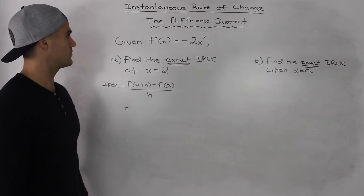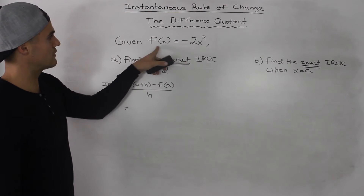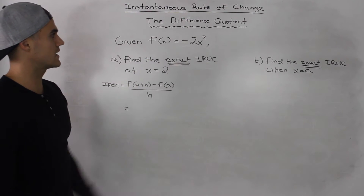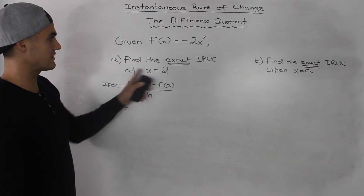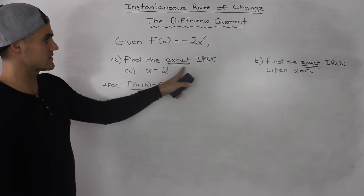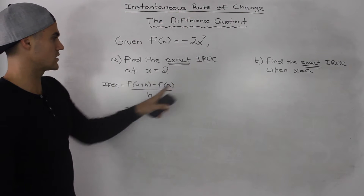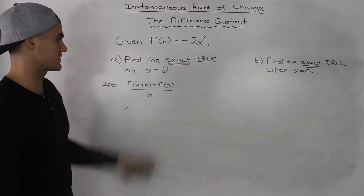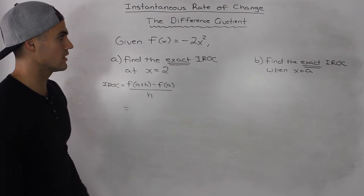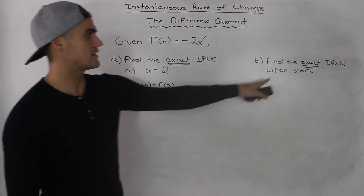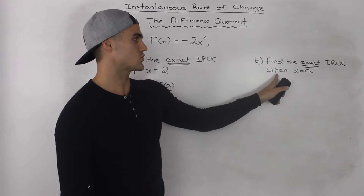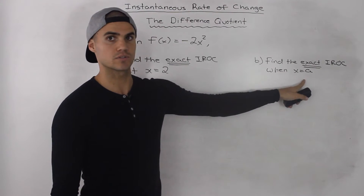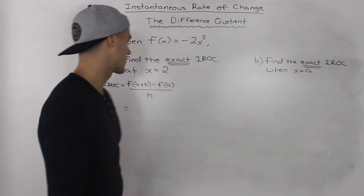Moving on to the next example: given f(x) = -2x², find the exact instantaneous rate of change at x = 2, and then find the exact instantaneous rate of change when x is equal to a.